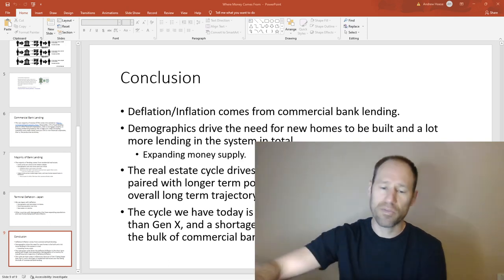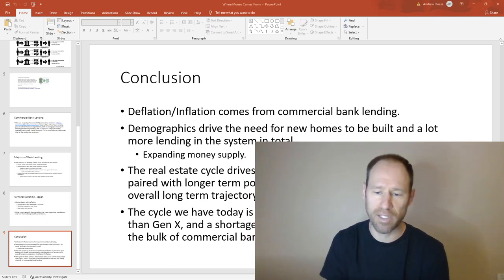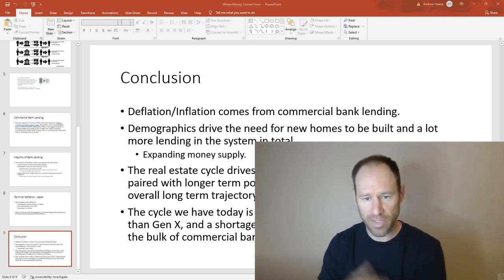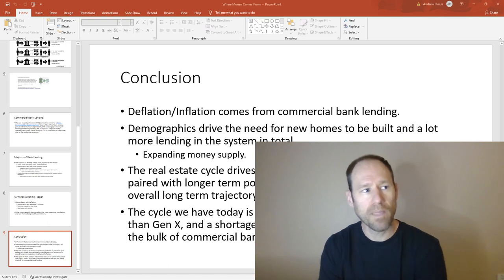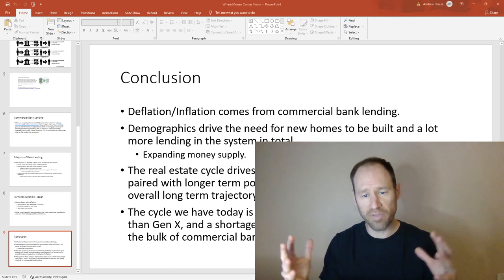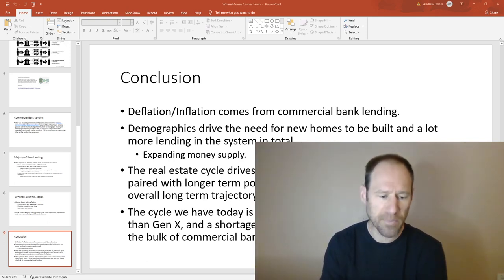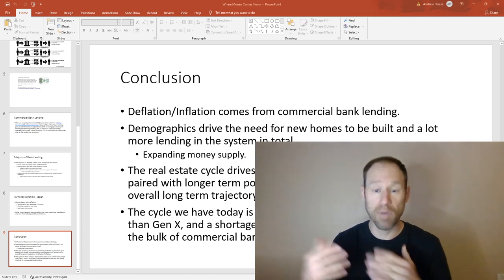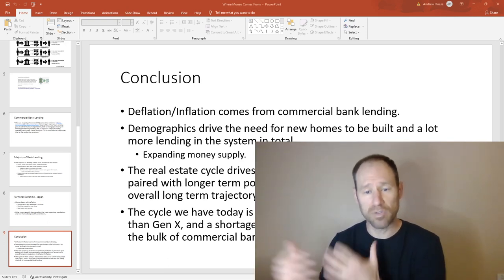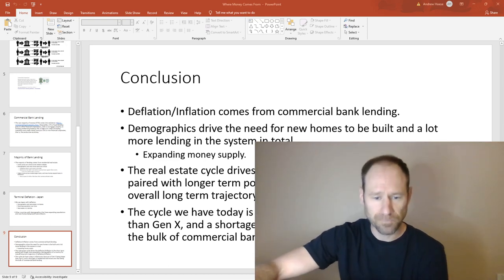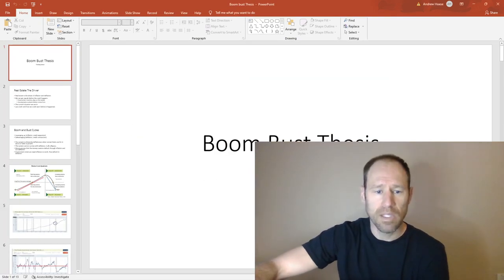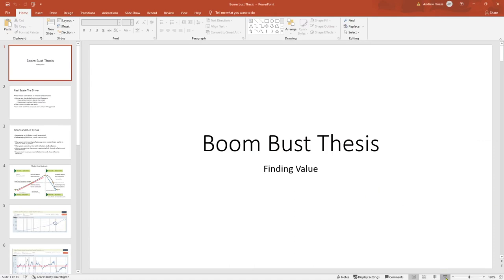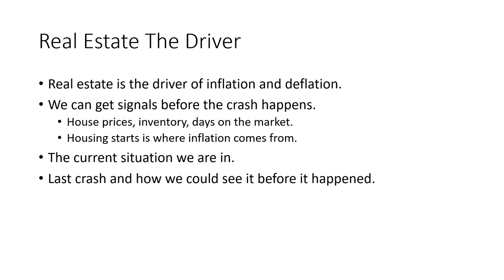We understand through fractional reserve lending that the majority of money in the system is created from loans. Those loans are against new homes being built — that's the most inflationary aspect of the cycle. It happens in an expansionary phase of real estate where inventory of homes dwindles to nothing and people are motivated to buy new homes. Real estate is the driver of this boom-bust cycle, and also the driver of inflation and deflation like we just went over.